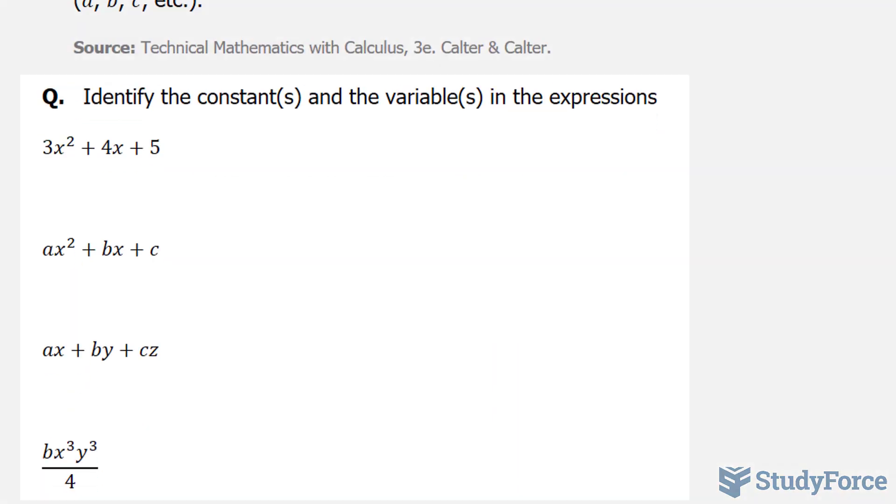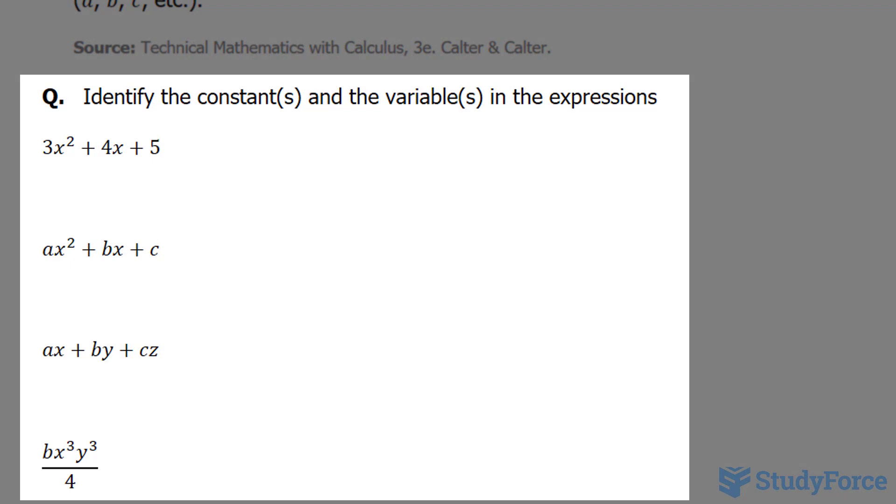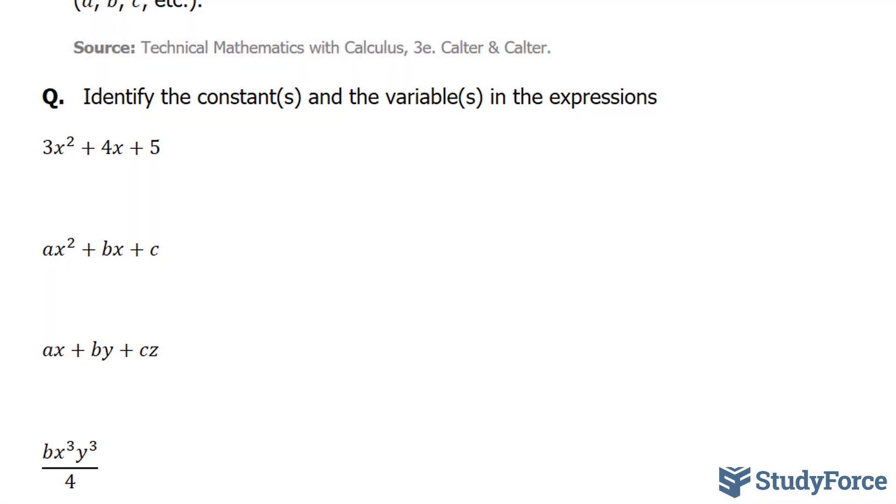The question asks, identify the constants and the variables in the expressions. Let's start with the first one. We have 3x squared plus 4x plus 5. This algebraic expression contains three terms. And we'll start with the first term.